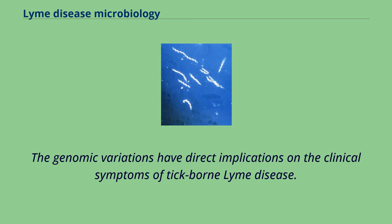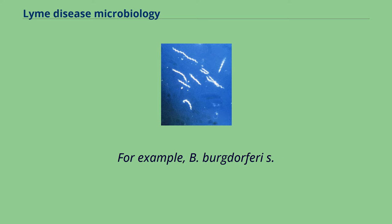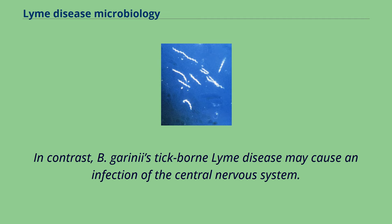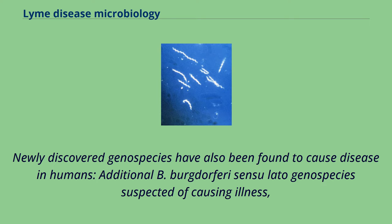The genomic variations have direct implications on the clinical symptoms of tick-borne Lyme disease. For example, B. burgdorferi s.s. tick-borne Lyme disease may manifest with arthritis-like symptoms. In contrast, B. garinii's tick-borne Lyme disease may cause an infection of the central nervous system. Newly discovered genospecies have also been found to cause disease in humans; additional B. burgdorferi sensu lato genospecies suspected of causing illness.